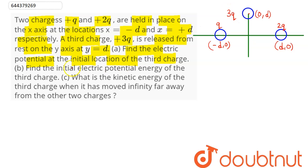Now, coming to the first part, electric potential at initial location of the third charge, that is at this point we can say as P, the potential here given as potential due to charge q and potential due to charge 2q.